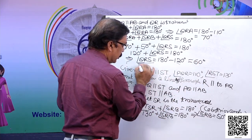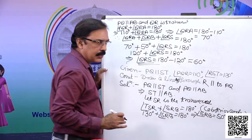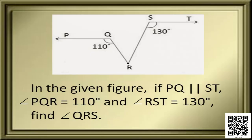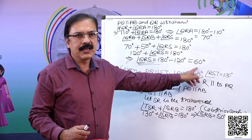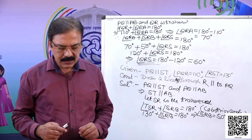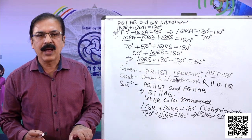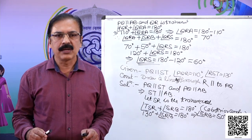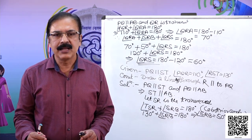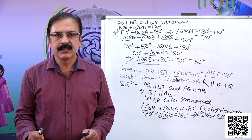Therefore angle QRS equals 180 minus 120 degrees, which is 60 degrees. We found that the value of angle QRS is 60 degrees — solved by applying the theorems of parallel lines.